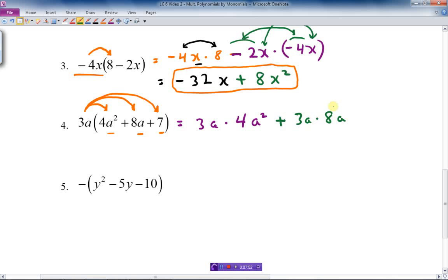Let's do that. 3 times 4 is 12, and a times a squared is a cubed. Plus 3 times 8 is 24, and a times a is a squared. We're almost finished. This one, we multiply the numbers: 3 times 7 is 21. Always do the coefficients or the numbers first. And there's just an a there. We're done.